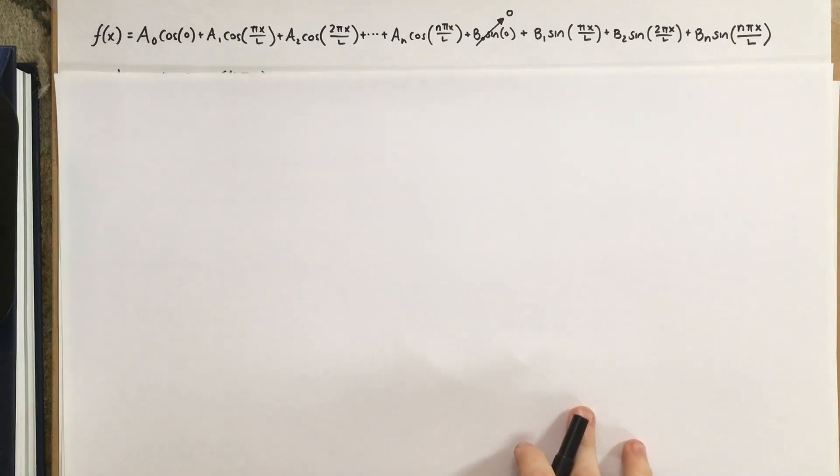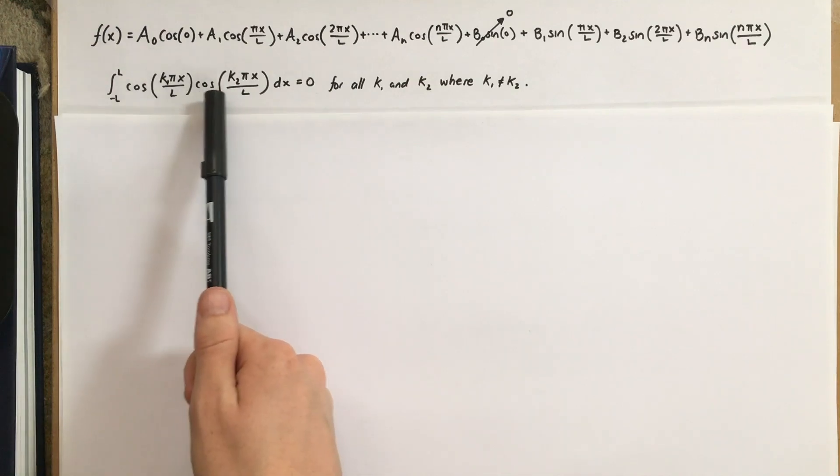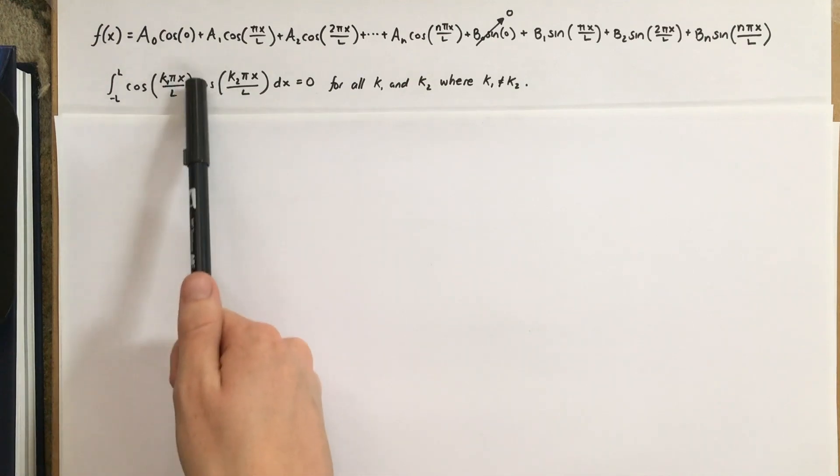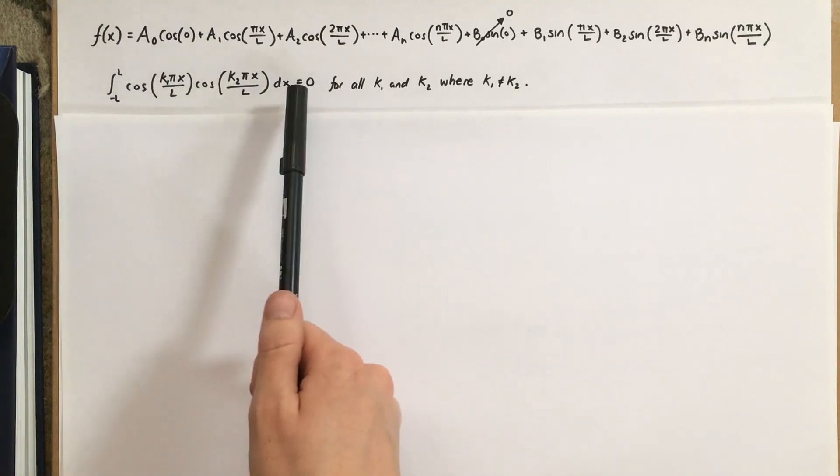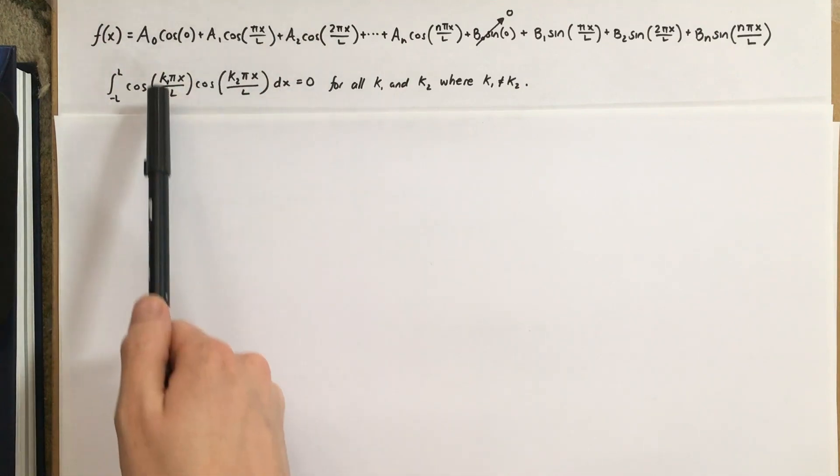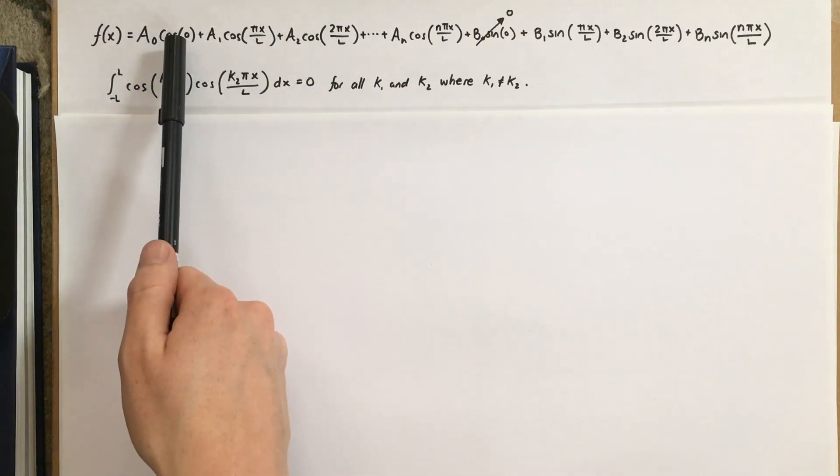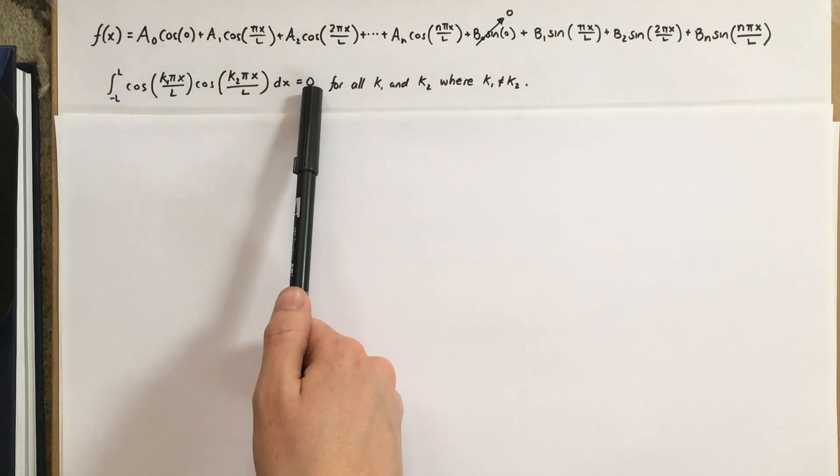So, if we take these integrals, if we do cosine of some random integer k1 times cosine of some random integer k2, with our pi x over L and pi x over L in there, we would find that that integral is 0. So, that means that all of these are orthogonal to each other, because they have just some differing integers in them, and that will always yield 0 when you multiply them.